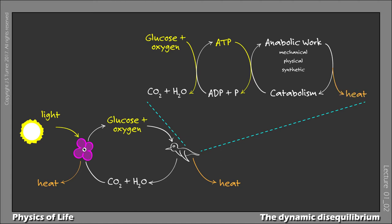In all instances, we see free energy being used to power the continual production of orderliness. Glucose and oxygen from CO2 and water, ATP from ADP plus phosphate, complex molecules and processes from simple molecules and simpler processes.